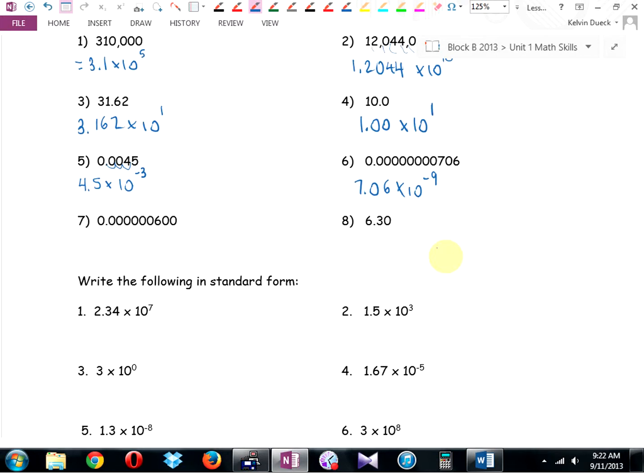It's going to be 7.06 times 10 to the 1, 2, 3, 4, 5, 6, 7, 8, negative 9. Is that what we got? Yep. What is 10 to the negative 9 on your yellow formula sheet? Is that nano? Yeah. So, 7.06 nanometers, liters, whatever it is.